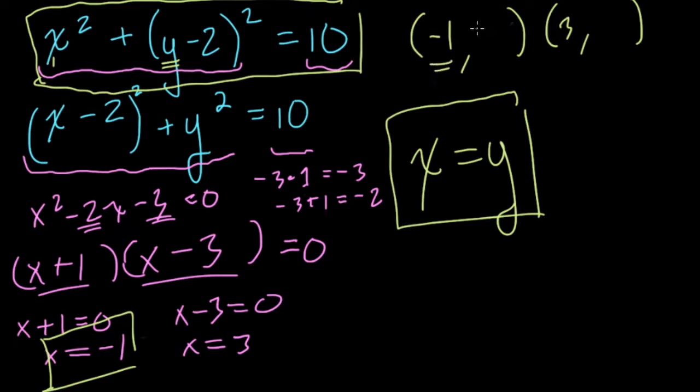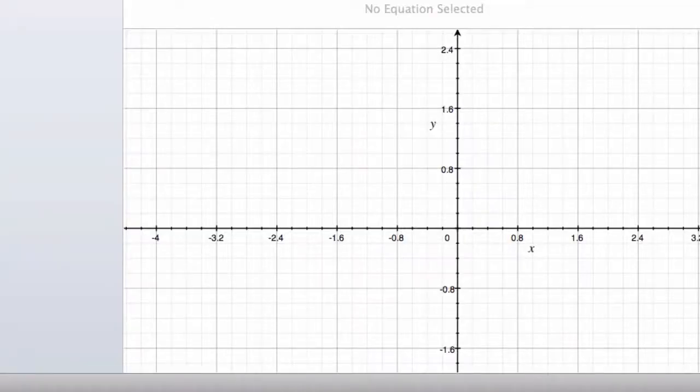So here, if we know x is -1, we also know what y is. It has to be the same thing. And if x is 3 here, so is y. And then we're done. We found those points.